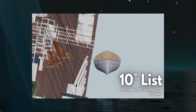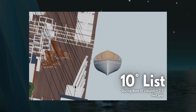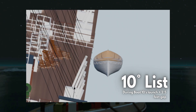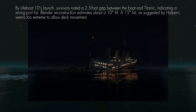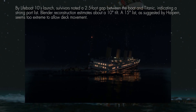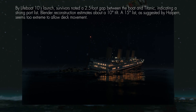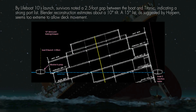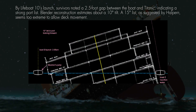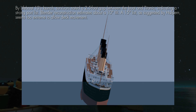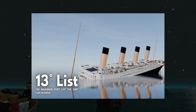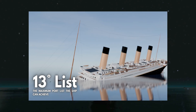Our next key moment is around 1:45 to 1:55 a.m.: the heavy port list as reported from lifeboat 10. By the time lifeboat 10 was launched, survivors observed a gap of about 2.5 feet between the lifeboat and the Titanic's side — visual evidence of a pronounced port list. When replicated in Blender, this equates to a tilt of approximately 10 degrees. While some analysis suggests a possible 15-degree list, such a value appears excessive as it would have severely hindered movement on deck. Simulations indicate a more realistic maximum list of about 11 to 13 degrees, likely persisting through the launch of Collapsible D around 2:05 a.m.